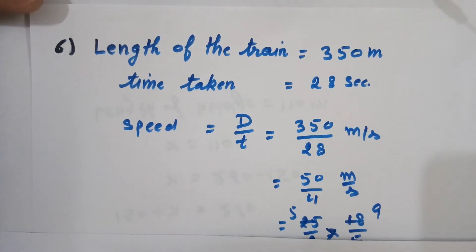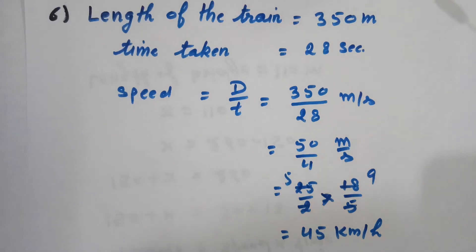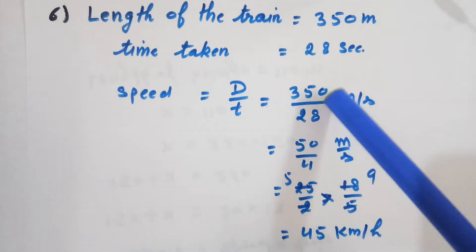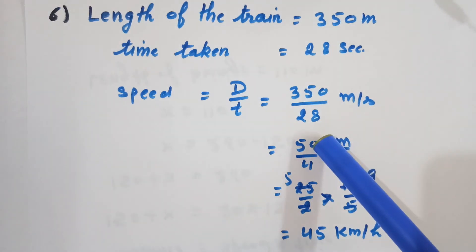After calculating, cancel in this way: 7 times 4 is 28 and 7 times 5 is 35, so it is 50 upon 4.